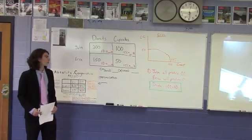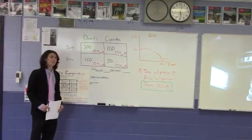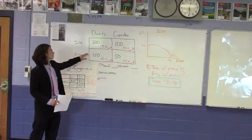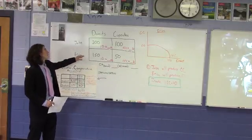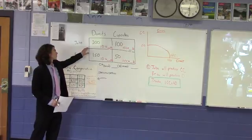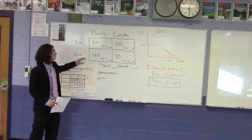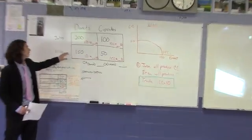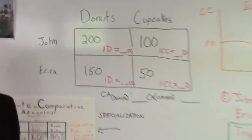So, to figure out who has an absolute advantage in producing donuts, we need to see who can use their resources to produce more donuts, John or Erica. John uses his resources to produce 200 donuts, but Erica can only use her resources to produce 150 donuts. So, we can see here that John has the absolute advantage in producing donuts.